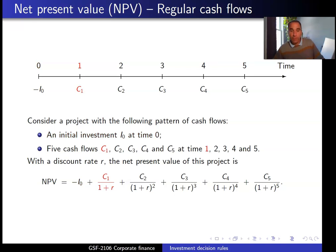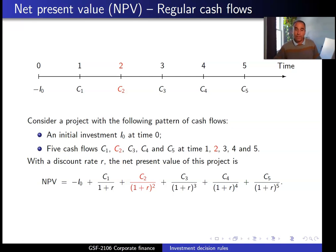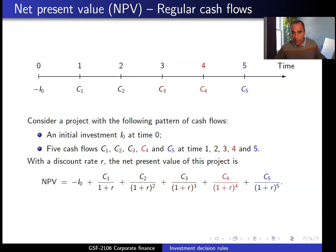The first cash flow C1 is discounted over one period at the appropriate discount rate. C2 is discounted over two periods, C3 over three periods, and C4 and C5 are discounted over four and five periods respectively.